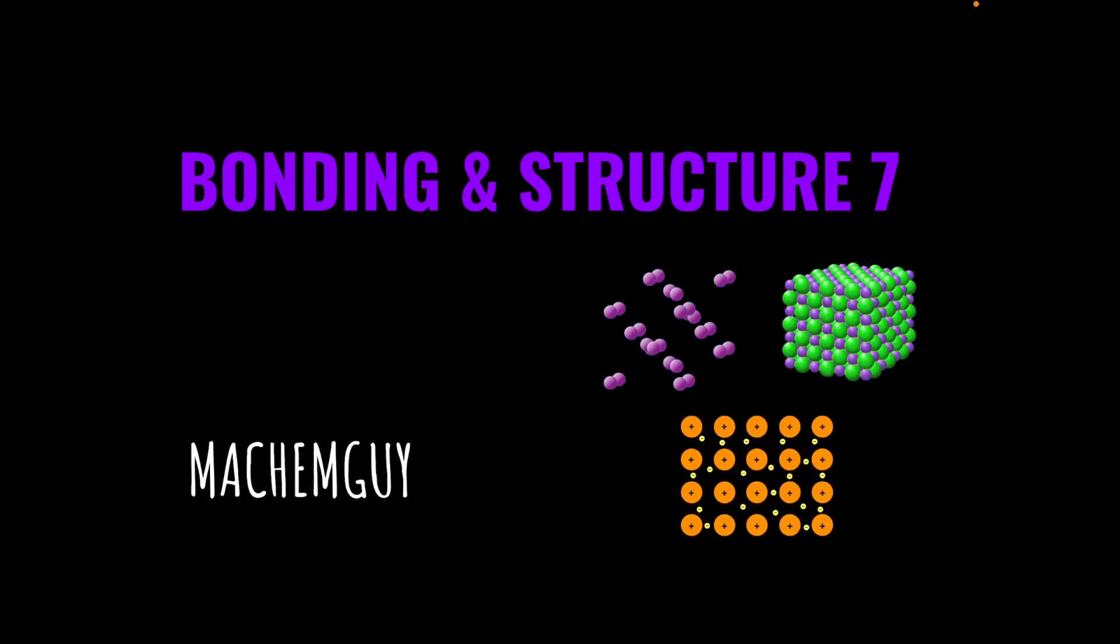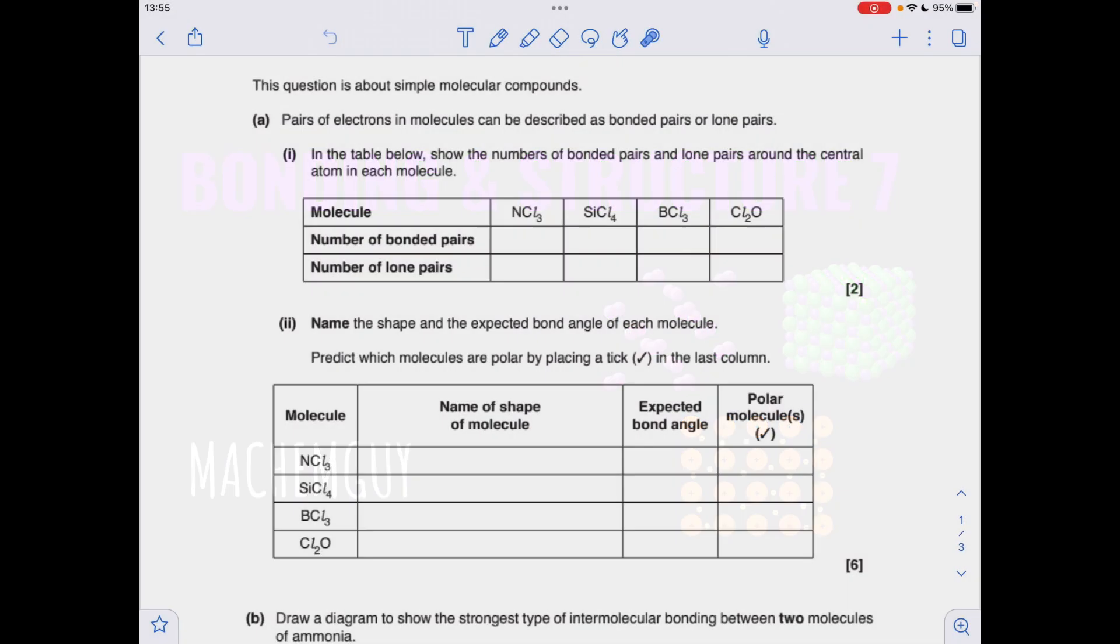I've got another set of questions for the structure and bonding topic. As always, the link to the questions in the description of the video—you want to try them first. Okay, so let's make a start. For the first question, we've got to put the number of bonded pairs and lone pairs in for each of these simple covalent substances.